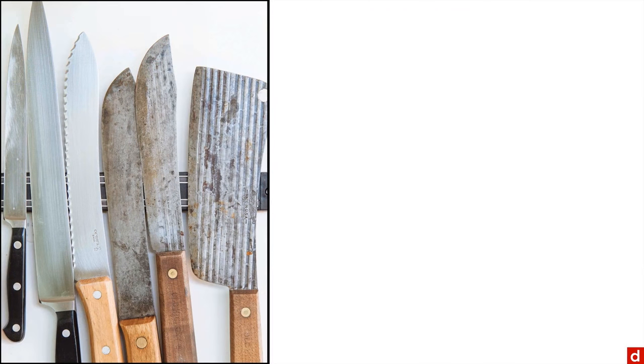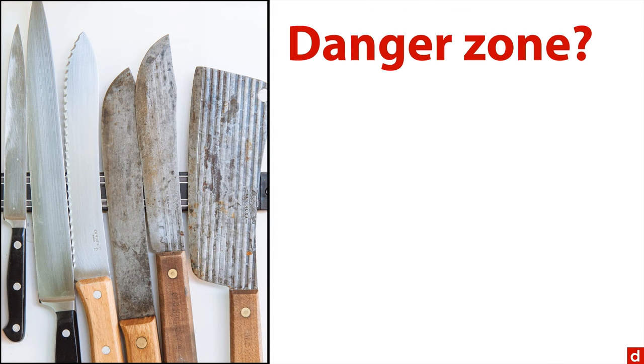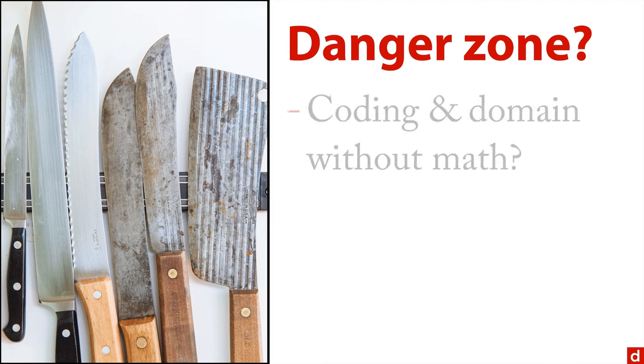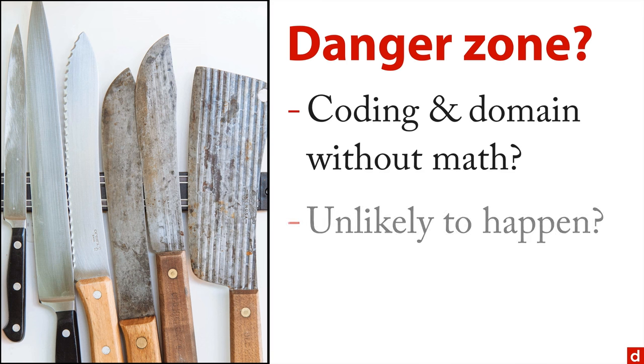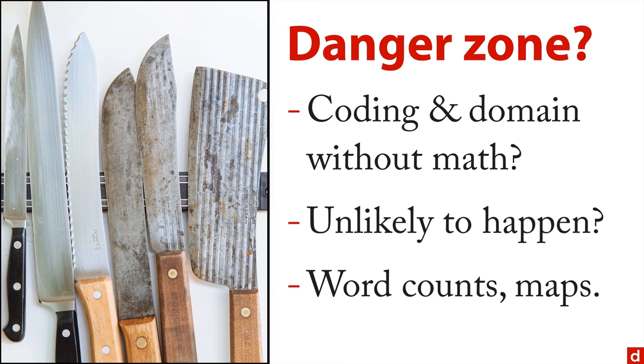And then finally, there's what Conway called the danger zone. And that's the intersection of coding and domain knowledge, but without math or statistics. He says it's unlikely to happen. And that's probably true. On the other hand, I can think of some common examples, what are called word counts, where you take a large document or a series of documents, and you count how often each word appears in there. That can actually tell you some important things. And also drawing maps and showing how things change across place and maybe across time. You don't necessarily have to have the math, but it can be very insightful and helpful.